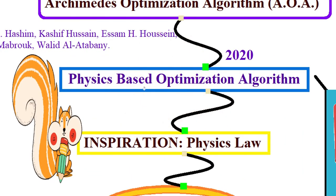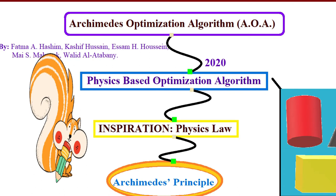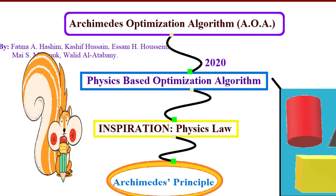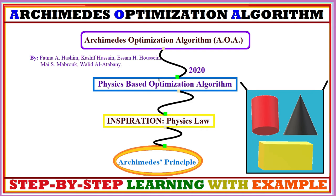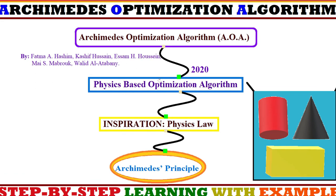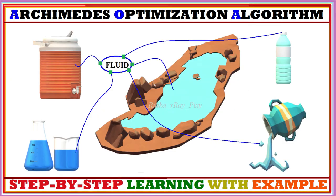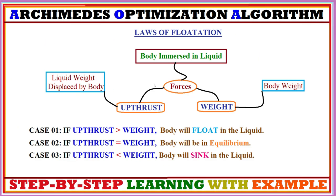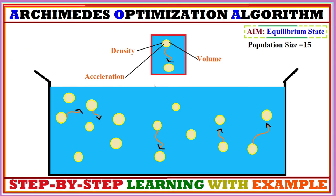This video is based on a new meta-heuristic optimization algorithm named the Archimedes Optimization Algorithm. We can use this algorithm to solve complex numerical optimization problems and engineering design optimization problems. In this video we will try to understand what this algorithm is all about, how it works, and the various steps used in this algorithm.